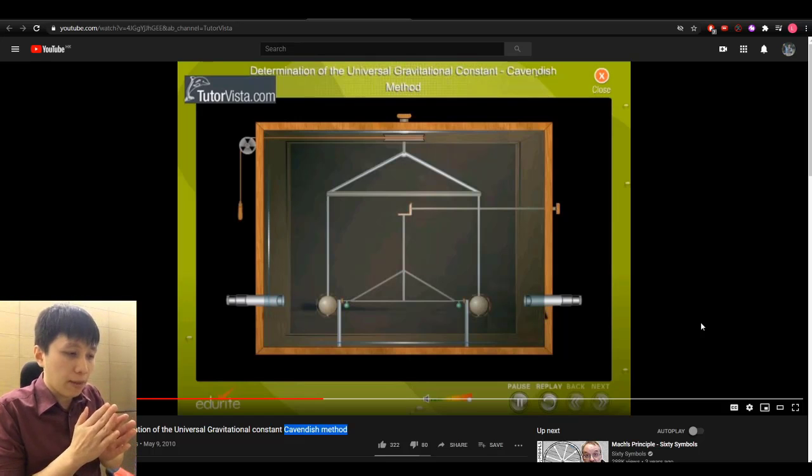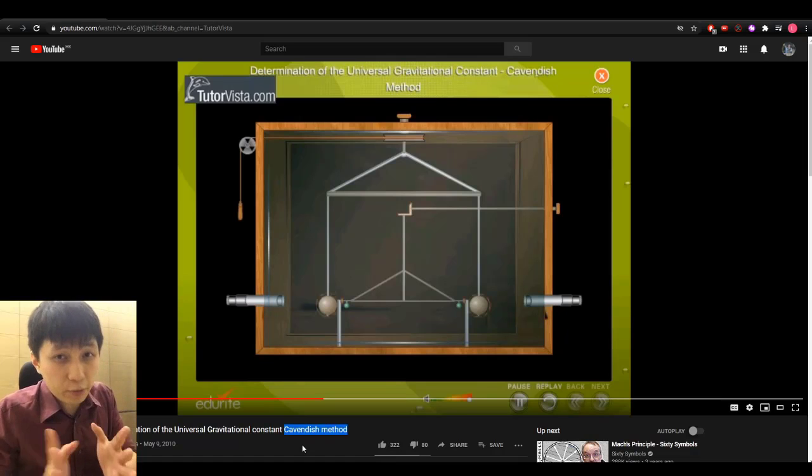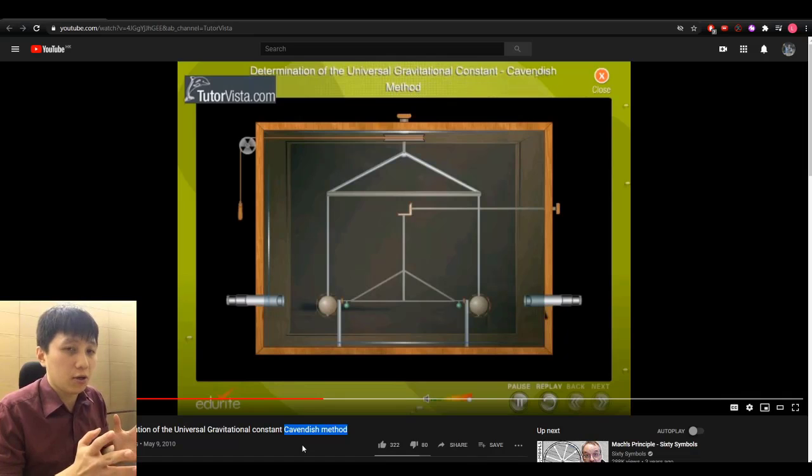Because if you think about the gravitational force later on, maybe later on we will calculate, the force is very, very small when you talk about two objects. So if you really want to find out the value of the force, it's very, very hard. So Cavendish was smart enough to design an experiment so that the results can be much, much magnified. And if you think about what you learned in chapter one about measurement uncertainty. So if you think about measuring anything, then you also have absolute uncertainty, right?